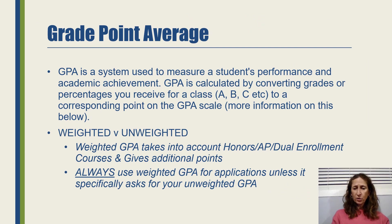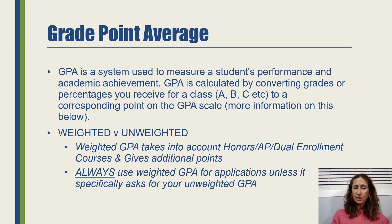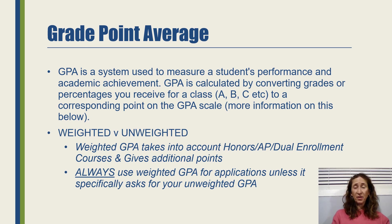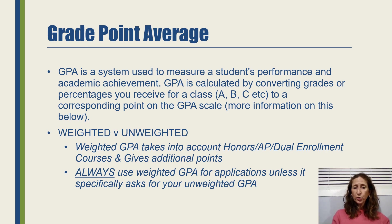Hopefully now you understand your GPA a little bit better, and the difference between weighted versus unweighted GPA. Your weighted GPA takes into consideration your honors, AP, and dual enrollment classes and gives you additional points. Your unweighted GPA treats all your classes as standard — no honors, no AP. You always want to report your weighted GPA unless you're specifically asked to report both or just your unweighted GPA.